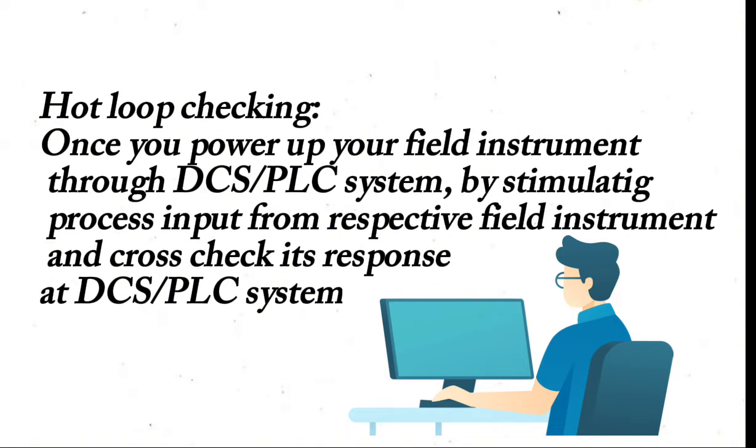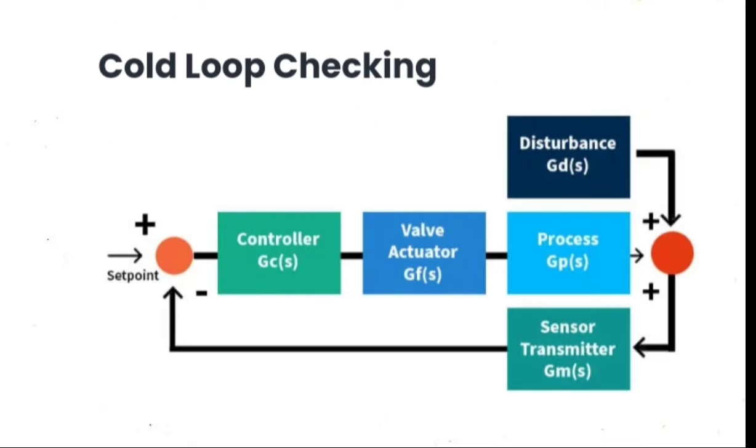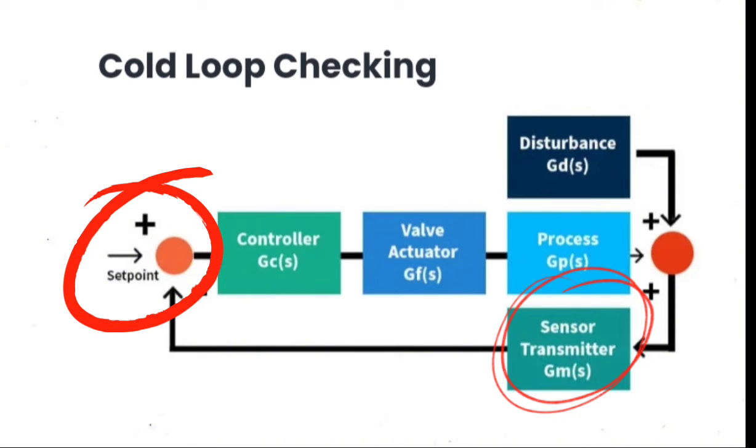At DCS or PLC system. Cold loop checking: the control panel's terminal block needs to be tested to make sure it works correctly. Field cabling begins from the field instrument and ends at the control panel.